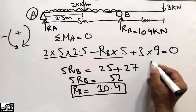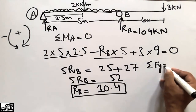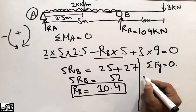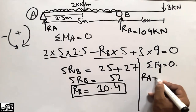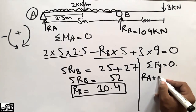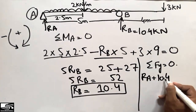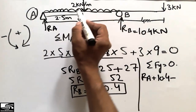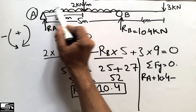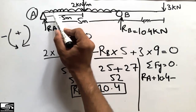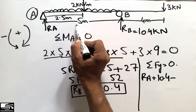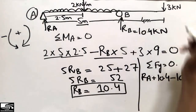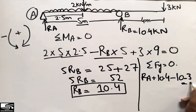Now to find RA, we take the summation of vertical forces equal to zero. RA is acting upward, RB is acting upward at 10.4 kilonewtons. The UDL converted to concentrated load is two into five, which is ten kilonewtons acting downward, and the three kilonewton concentrated load is also acting downward.